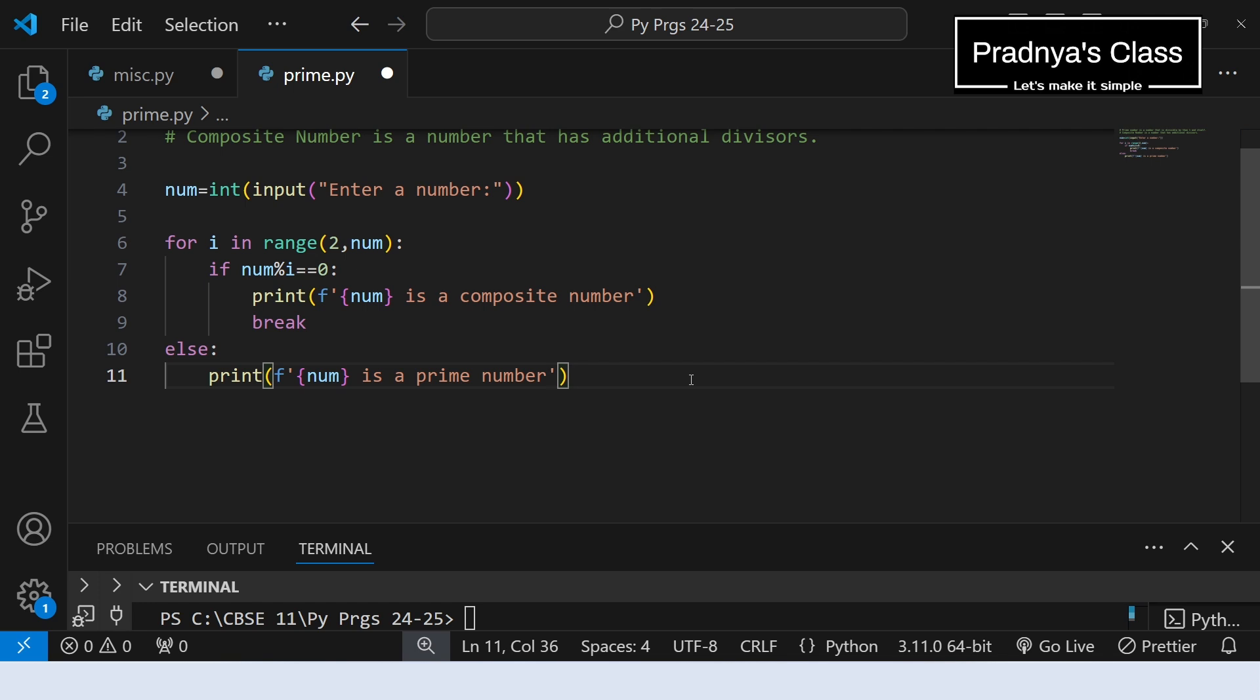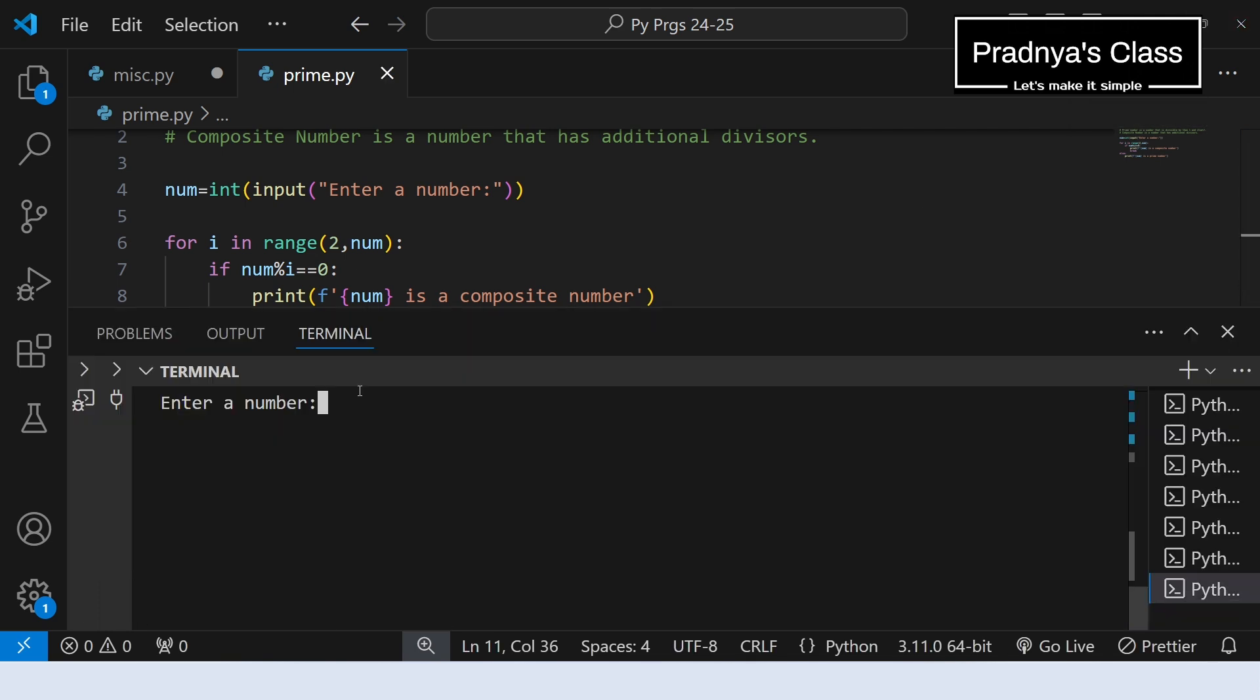Alright we are done with the code. It's time to execute it and check the output. Let's enter one prime number and check first. So 5 is a prime number, you can check for other values too.